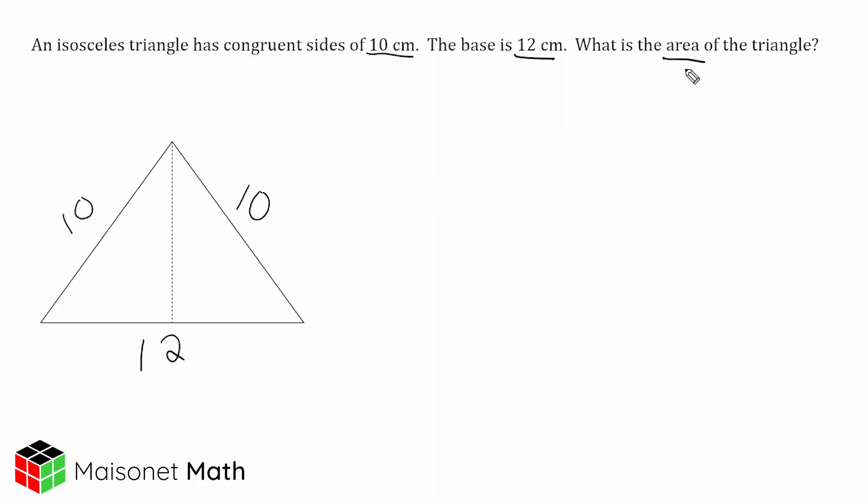Now remember, to find the area of any triangle we simply take the base of the triangle, multiply by its height, and then divide that product by two. Now the base of the triangle is given—it is 12—but the height of this triangle is not given. We have to use this information to figure out what this height is.